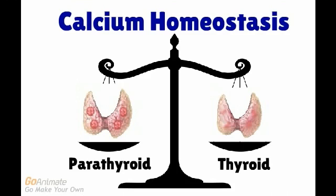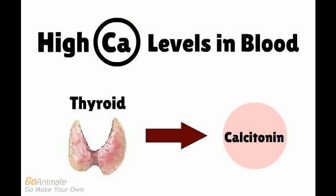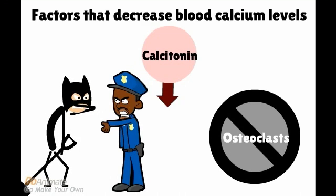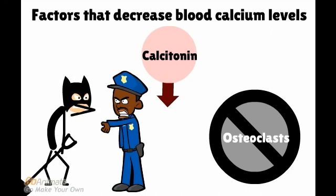Let's now examine the other side of blood calcium homeostasis. What happens when calcium levels in the blood are too high? When there are high levels of calcium in the bloodstream, the thyroid gland produces calcitonin. Calcitonin is a hormone that increases bone building, meaning that more calcium goes from the bloodstream into the bones. You can think of calcitonin as a police officer who is stopping the vandals from taking apart the building — thus calcitonin stops the osteoclasts from doing their job.